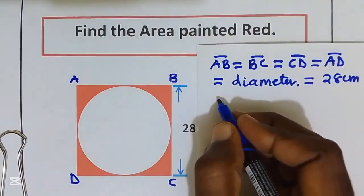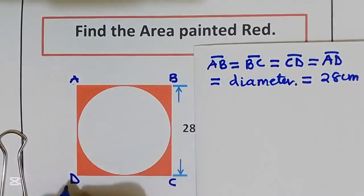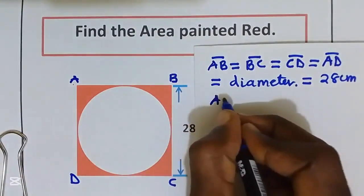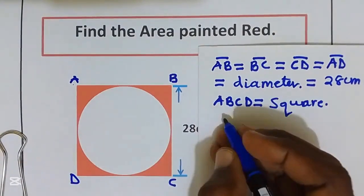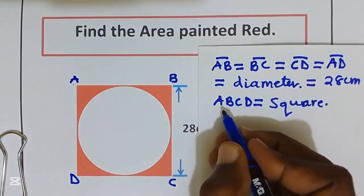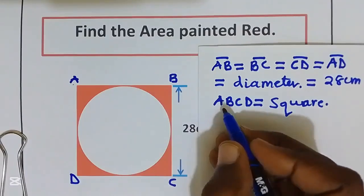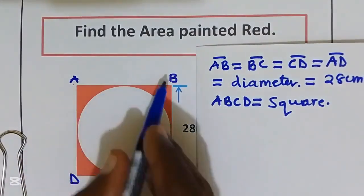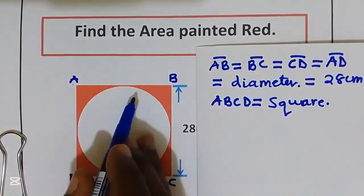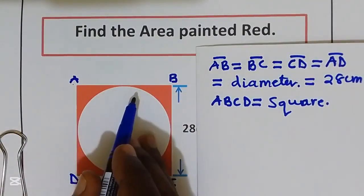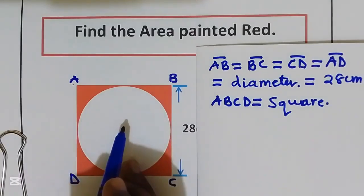That confirms figure ABCD is a square. So to get the shaded area we are going to take the area of square ABCD and take away the area of the circle. Let us find the area of the square.